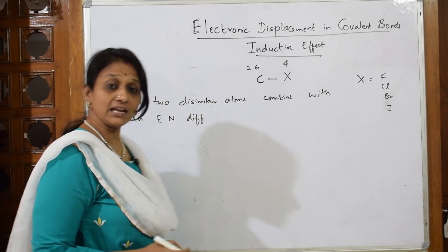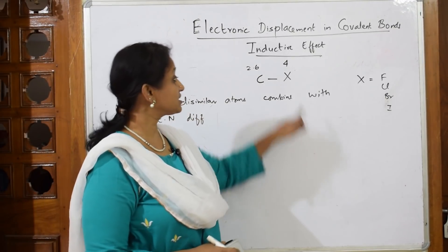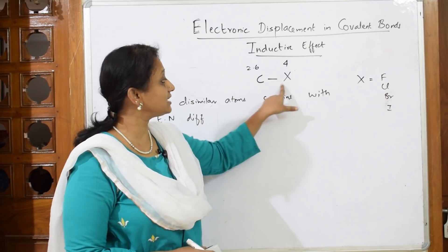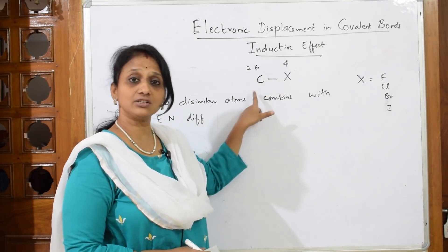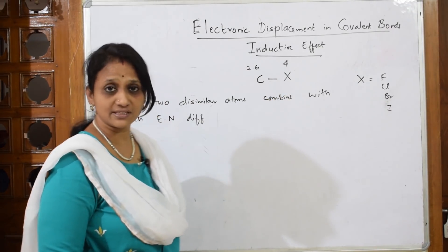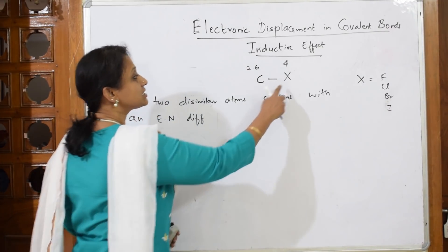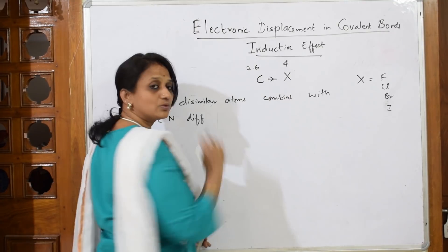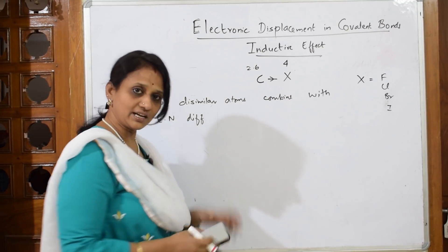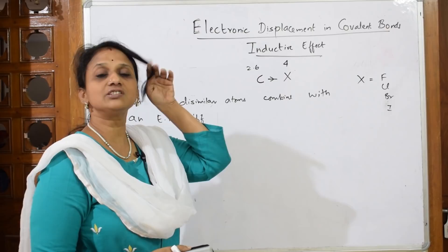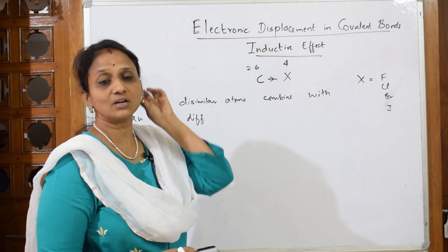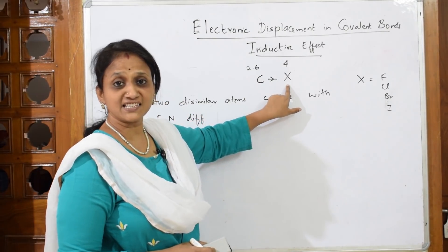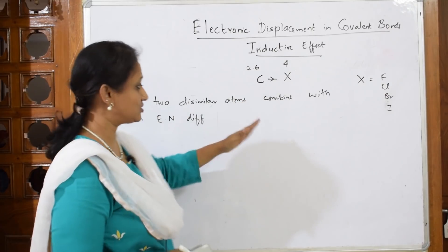When two dissimilar atoms combine with an electronegativity difference, the element with higher electronegativity starts dragging the electron density towards itself. As it drags the electron density, a partial negative charge develops on the electronegative atom and a partial positive charge develops on the carbon.